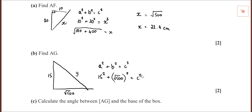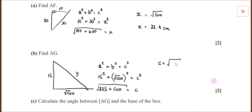I could have used 22.4 — no problem if you did — but ideally leave it as root 500 because the square root of 500 squared is just 500, which makes the arithmetic clean. 15 squared is 225, plus 500 equals 725. Then c is the square root of 725, which on your calculator is 27 centimetres. We can check: it should be a bit longer than the other one, and it is.